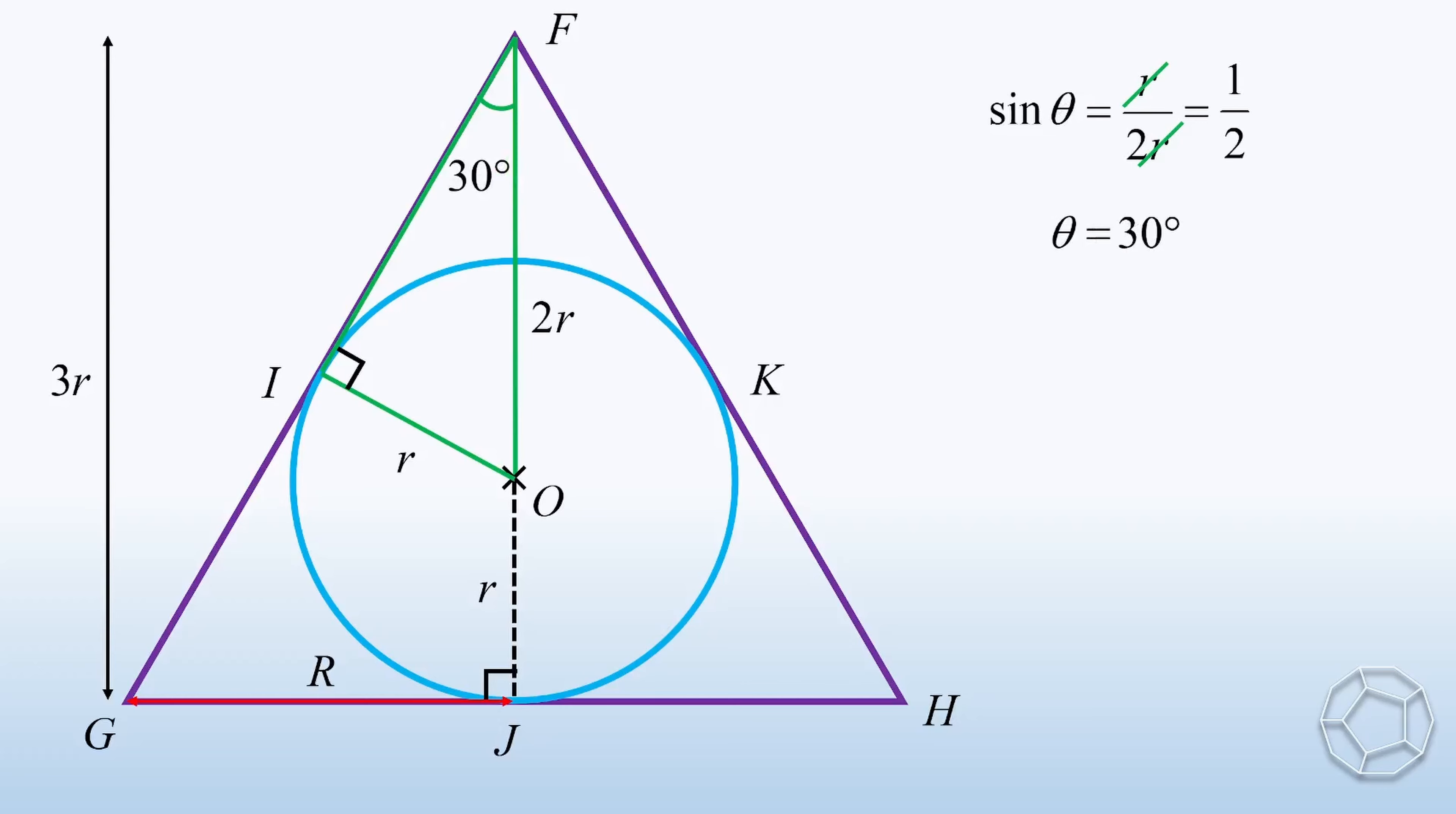Now we look at the larger red triangle. Capital R over 3r is equal to tangent 30 degrees. This is equal to square root 3 over 3. Cancel out 3 on both sides. We have capital R is equal to small r times square root 3. Great! Everything is ready.